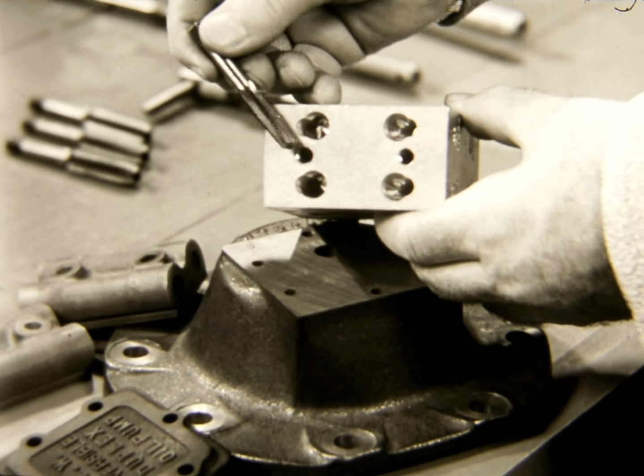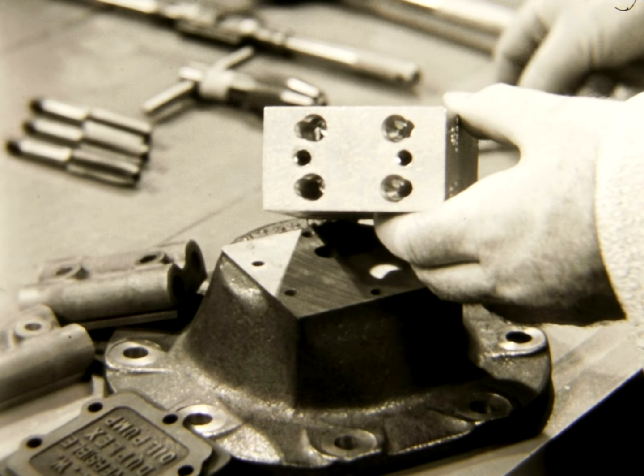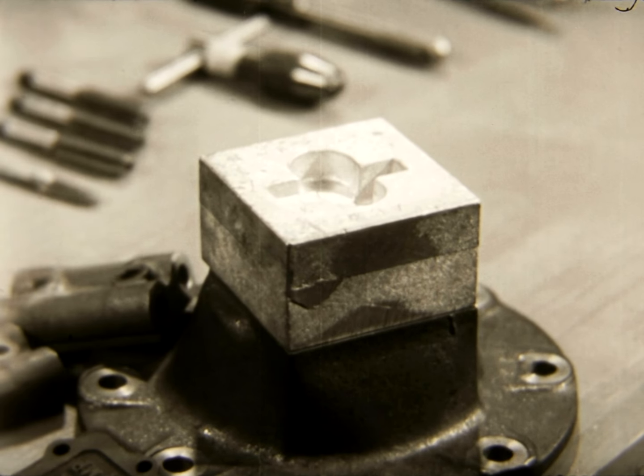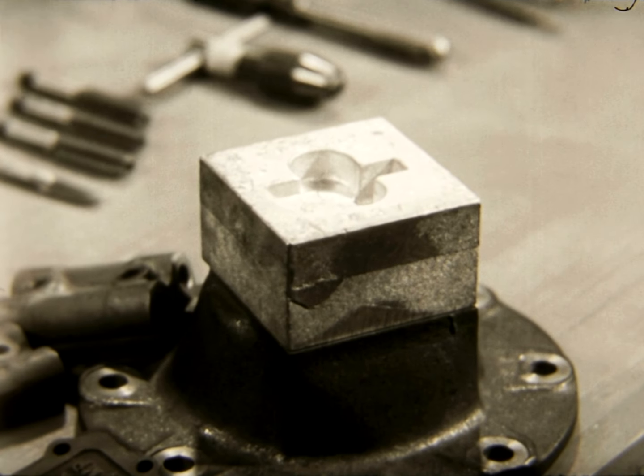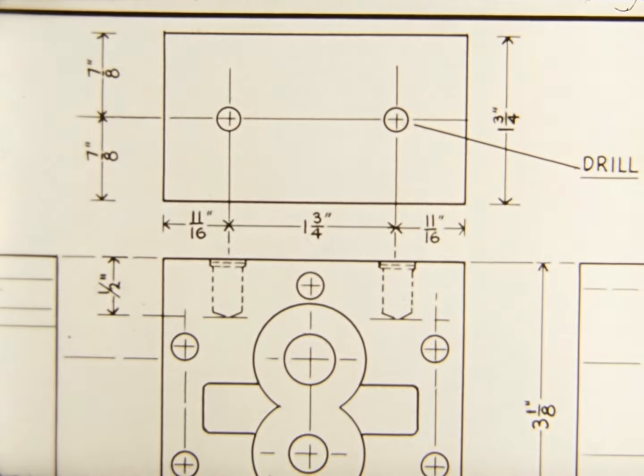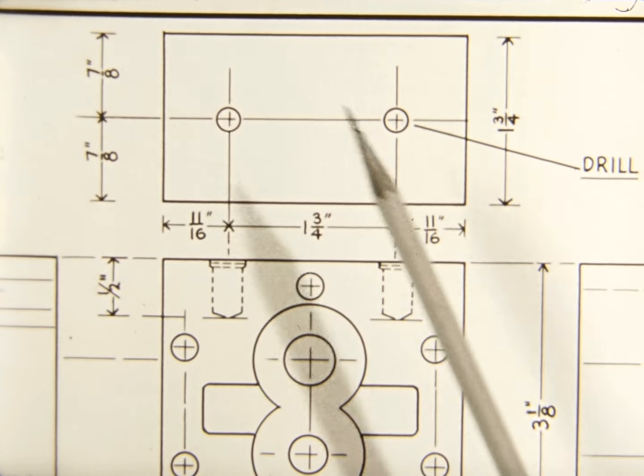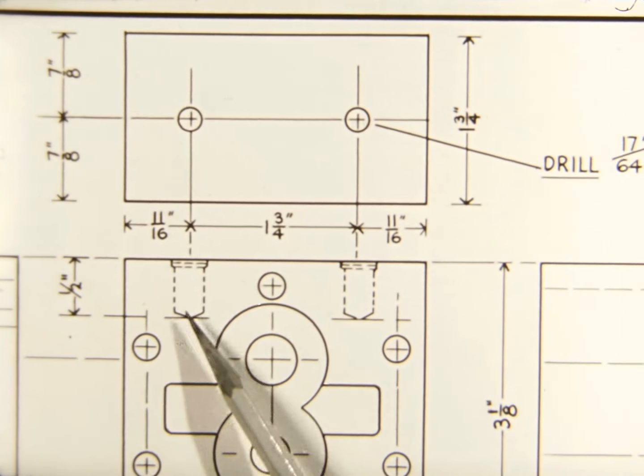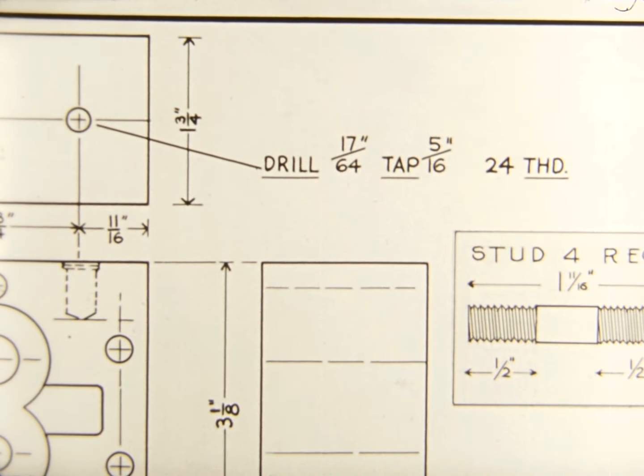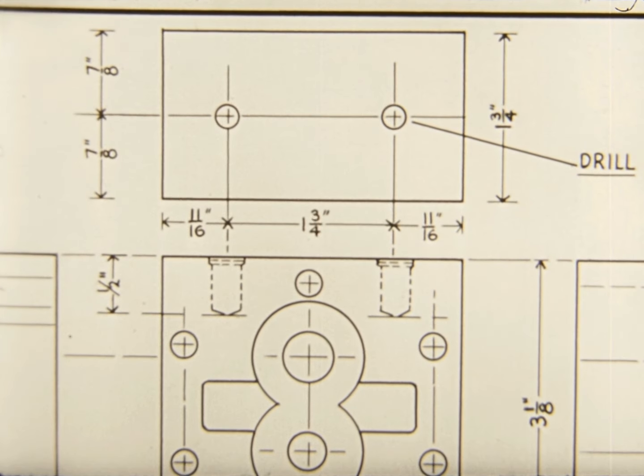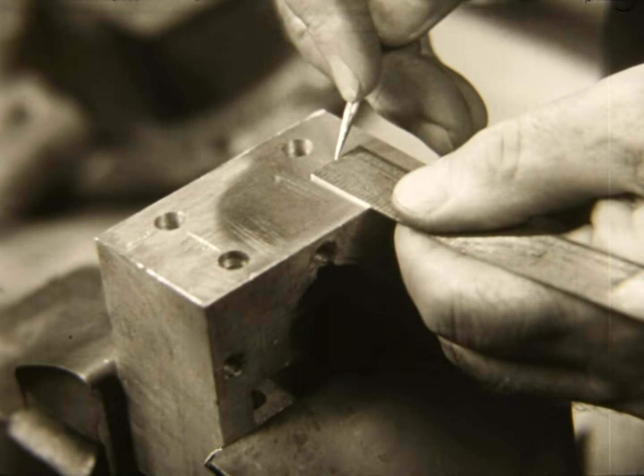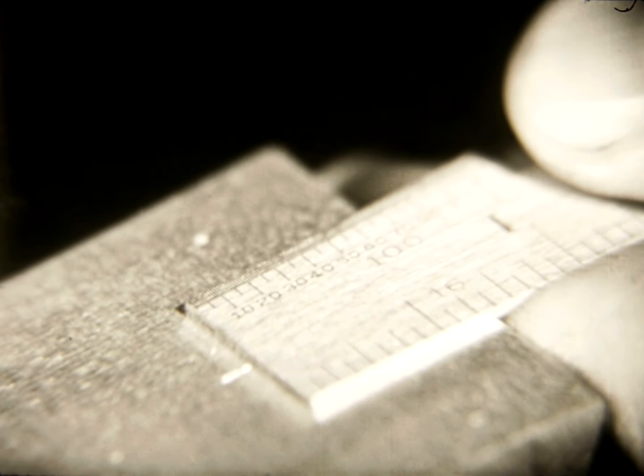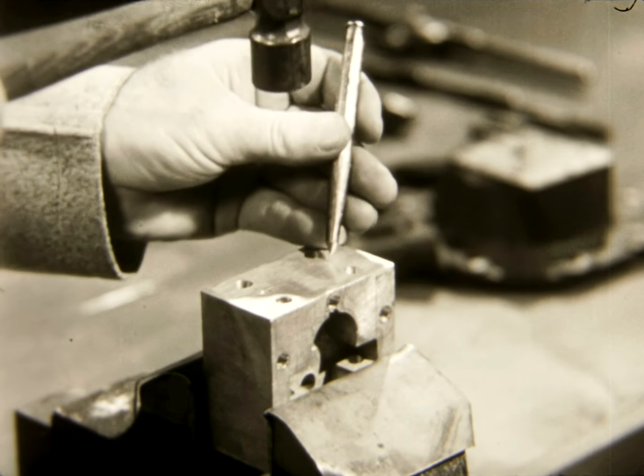Oftentimes blind holes which do not go through a piece are cut at a bench. This piece, for example, is the body of a fuel pump. An internal threading or tapping job of this kind starts with the unfinished piece and a study of the blueprint, which shows that two tapped holes are required, each 5/16 inch in diameter, 1 1/2 inch deep, and with a 24 pitch thread. The blueprint also shows the location of the holes. These must be properly located and center punched to help locate the drill.